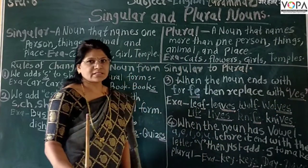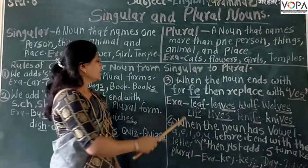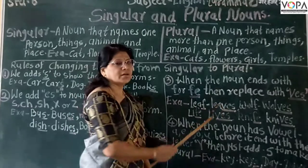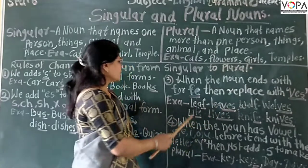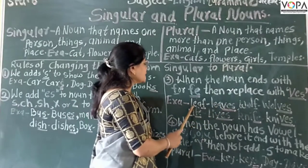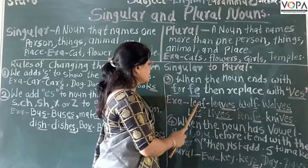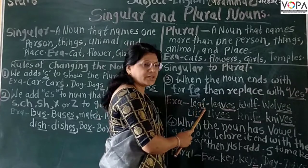For example: leaf — leaves. Look here. The spelling is here: L-E-A-F becomes leaves. We remove the F and add V-E-S.